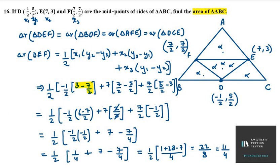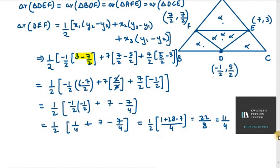Now we have to find area of triangle ABC. So how do you find the area? You have to multiply this with 4. So area of triangle ABC is equal to 4 times area of DEF. So 4 times 11/4, 4 and 4 cancel, you have 11 square units.